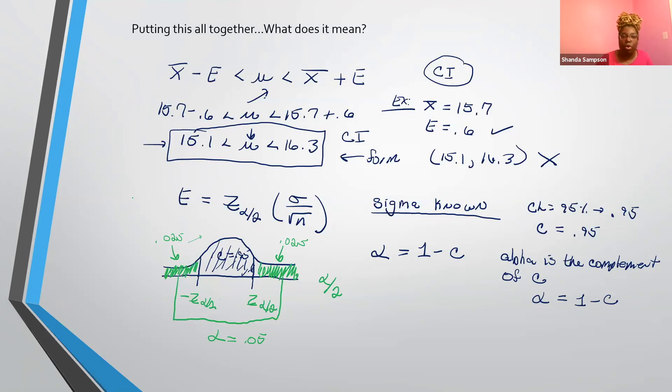You already know sigma over the square root of n. So this is the error formula right here. And this is how we get it. And that's what Z alpha over two is.